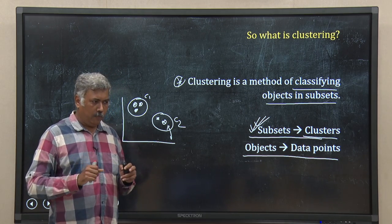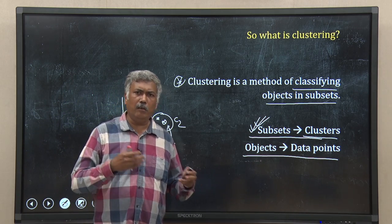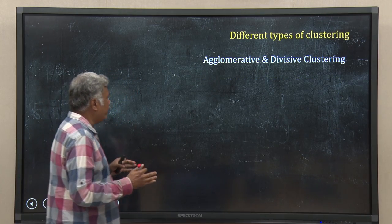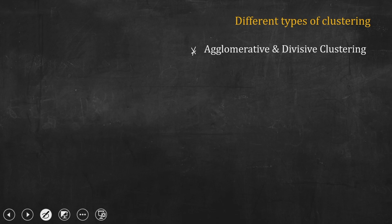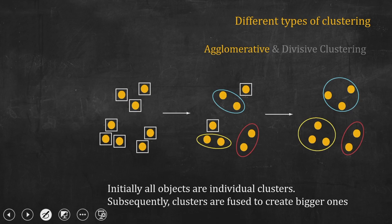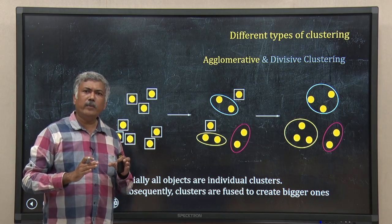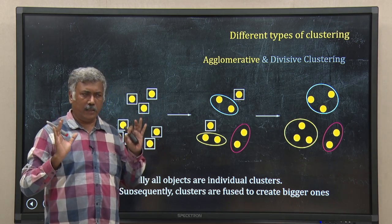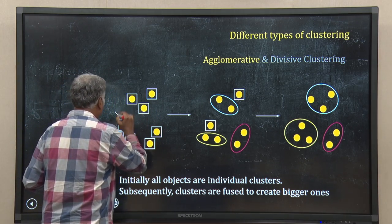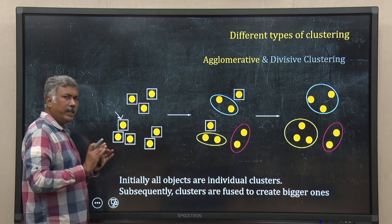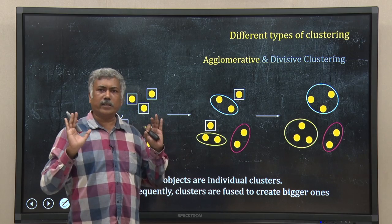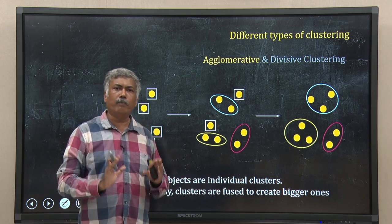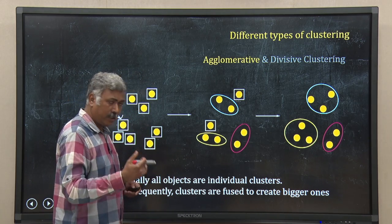Clustering can be of multiple types — agglomerative, divisive, flat, hierarchical. Let me go through what those are. In agglomerative clustering, you start by considering that each object, each data point, is itself a cluster. So if I have 8 data points I have 8 clusters at the beginning of the algorithm in the first step.